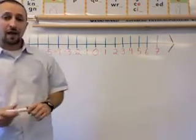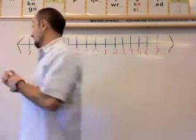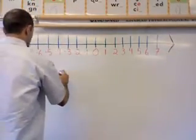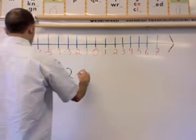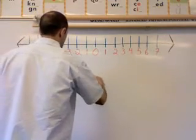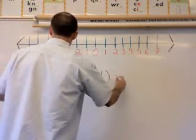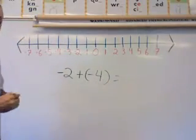Now we can start looking at adding integers. So let's say we're given a negative 2 and I want to add it to negative 4. Well, this is where my number line is going to come in handy.